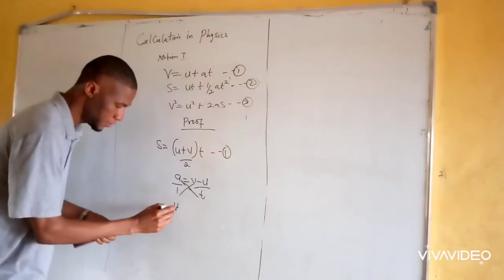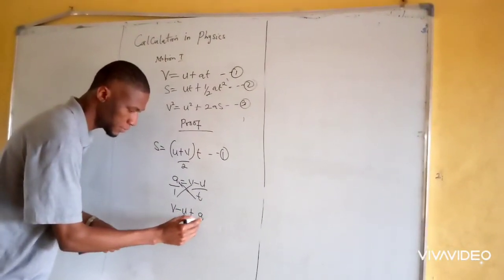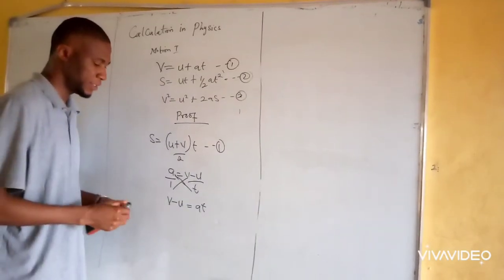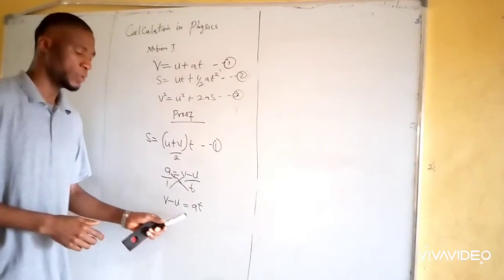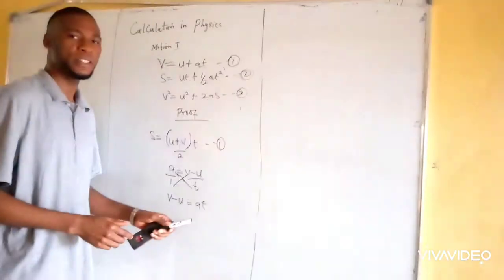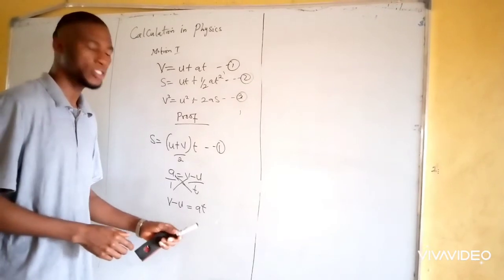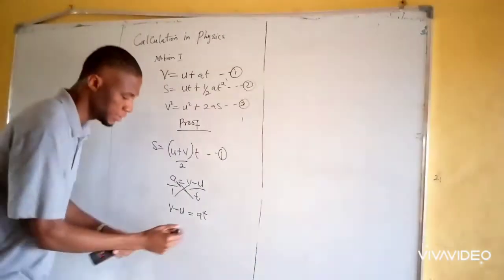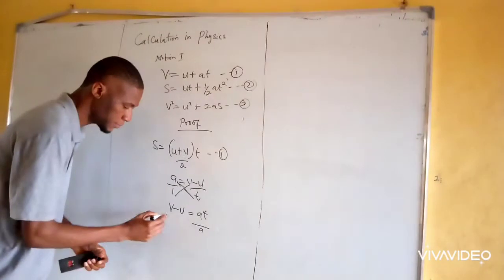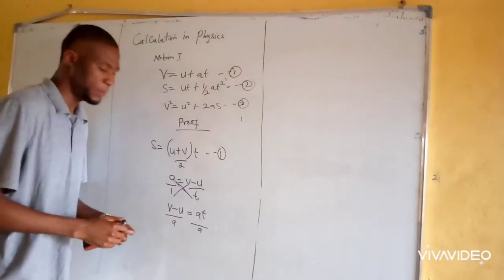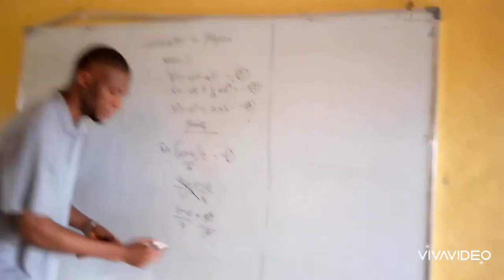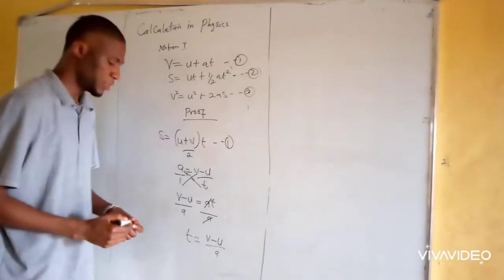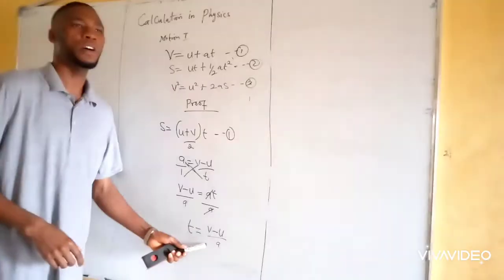We now have v minus u equals at. In this case we want to make t the subject of the formula. Dividing both sides by a, we arrive at t equals v minus u all over a. We can name this as equation two.